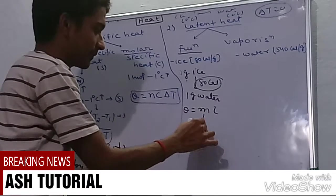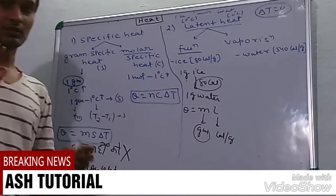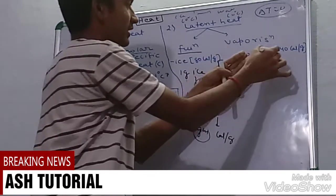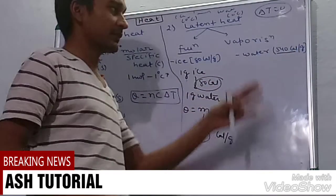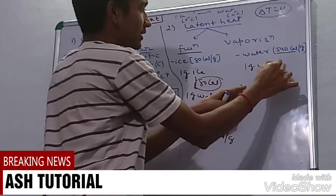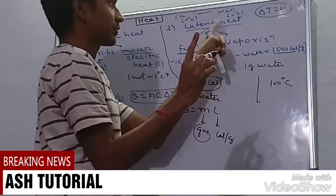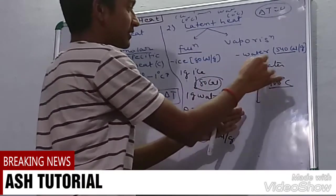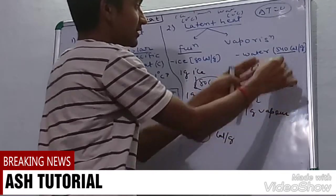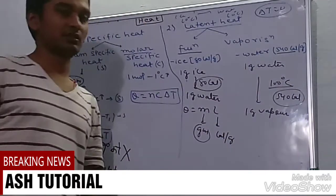Now vaporization example: water is 540 calories per gram. If you want to convert one gram water at 100 degree centigrade to one gram vapor, it is requiring 540 calories heat.